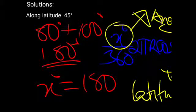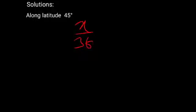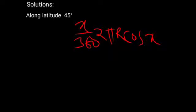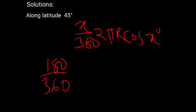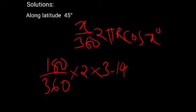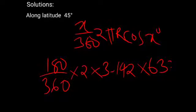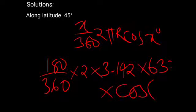So we are replacing now. Our angular difference is 180, so we have 180 over 360, times 2, times pi 3.142, times the radius of the earth 6,370 kilometers, times cos of the latitude which is 45 degrees.